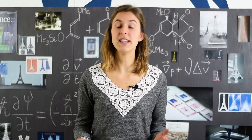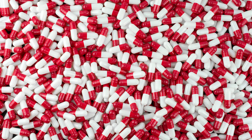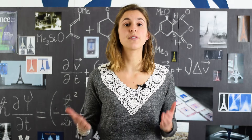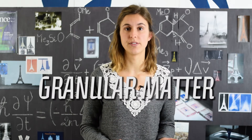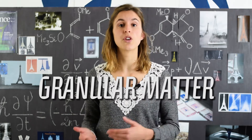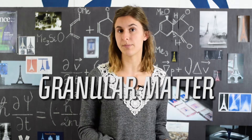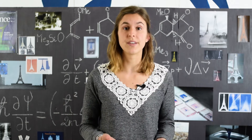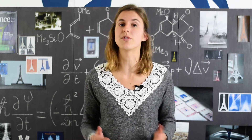On Earth, many of our resources take the shape of small grains: sand on beaches, grain in silos, sugar and salt in our kitchens, gravel on roads, and even tablets in pharmaceutical factories. All of these are examples of granular matter. Just like soap films, polymers, or liquid crystals, granular matter belongs to the field of soft matter, because often enough it's not very clear whether it's a liquid or a solid.